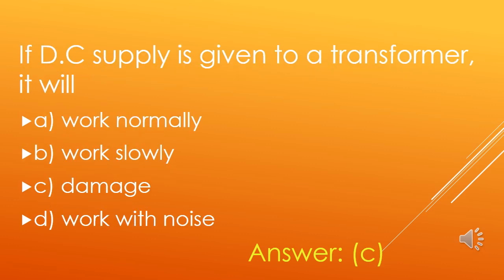If DC supply is given to a transformer, it will: A. Work normally, B. Work slowly, C. Damage, D. Work with noise. If DC supply is given to a transformer, it will damage or burst. So, option C is the right answer.